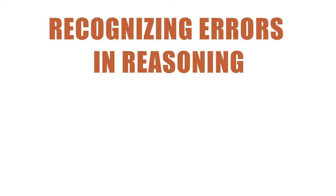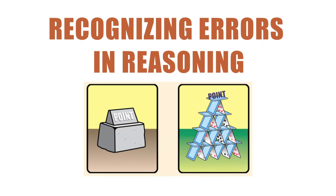Now we will look at some common errors in reasoning, also known as fallacies, that take the place of the real support needed in an argument. A valid point is based on a rock-like foundation of solid support. A fallacious point is based on a house of cards that offers no real support at all.